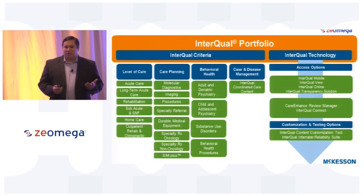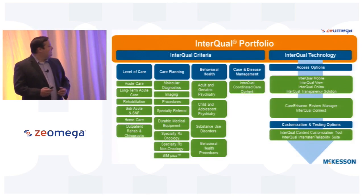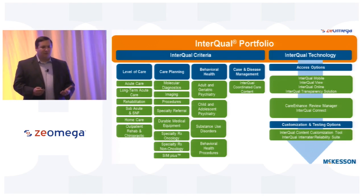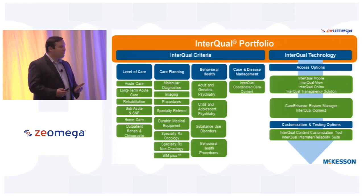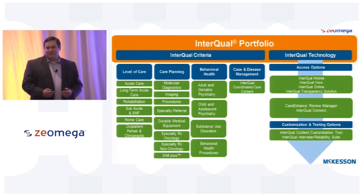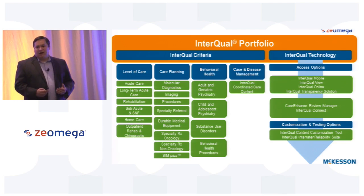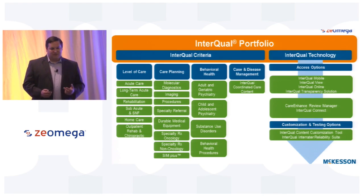Let me talk about the portfolio. We've got the content, the criteria, and then the technology that delivers that information. We have the level of care content that's facility-based — post-acute for your hospitals. We have the care planning, which are your providers' pre-certifications. We have the behavioral health content, including substance abuse disorders and the opioid challenges — there are epidemics throughout the country right now, very scary. And we also have InterQual Coordinated Care content — an assessment-based content where you're able to build out your barriers, interventions, and goals, so you build care plans and take care of members using that care plan.